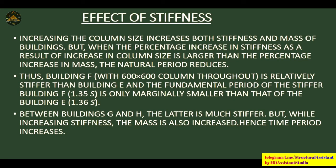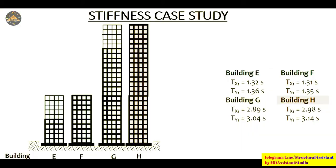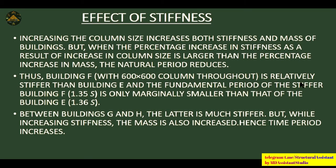To explain this concept clearly: increasing column size increases both stiffness and mass of the building. But when the percentage increase in stiffness due to increasing column size is larger than the percentage increase in mass, the natural period reduces. This is what happens with buildings E and F — building F is relatively stiffer, so its fundamental period is only marginally smaller than building E. But between G and H, mass plays a dominant role, so building H has a higher time period.